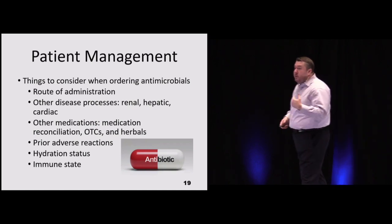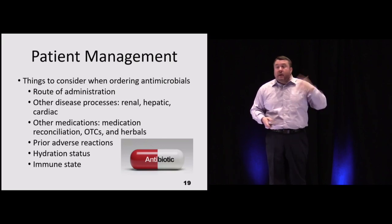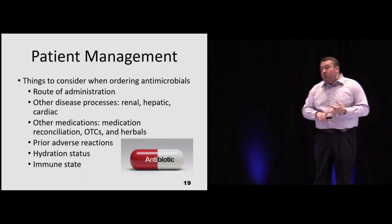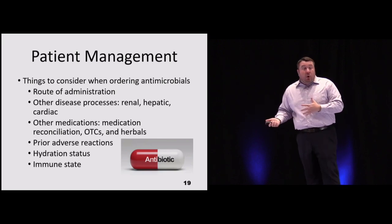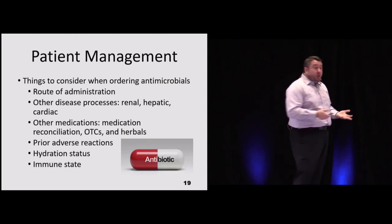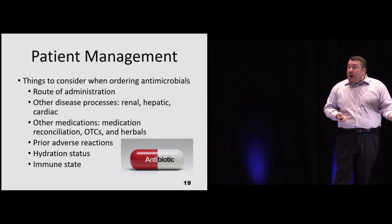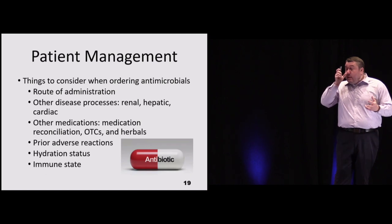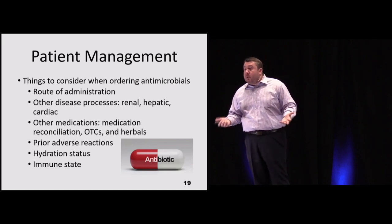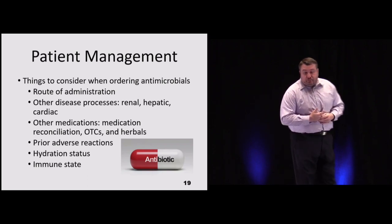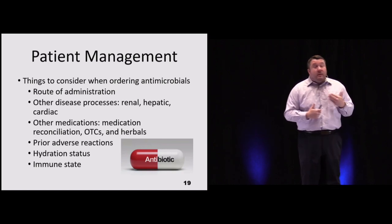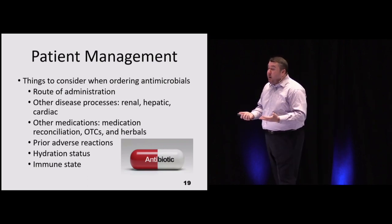When prescribing antimicrobials, consider: Can the patient swallow medications, or do they need daily infusions or parenteral administration? Check hepatic, cardiac, and renal function — if the drug is a prodrug requiring hepatic biotransformation and liver function is impaired, it may not be appropriate. Consider urinary excretion for UTIs, volume of distribution in heart failure patients, and always ask about other medications including over-the-counters and herbals, as these can impact biotransformation and therapeutic effect.